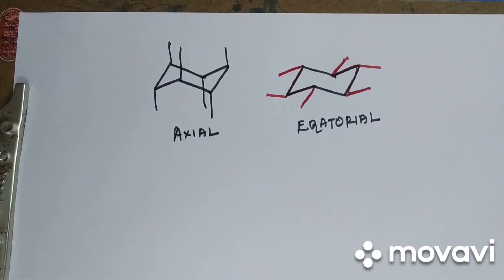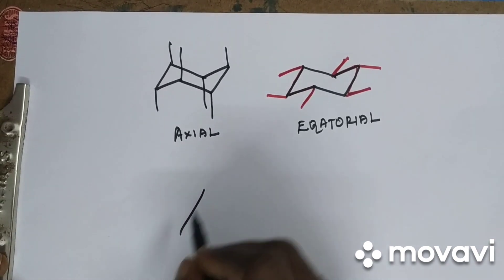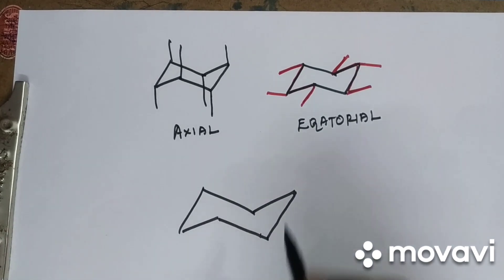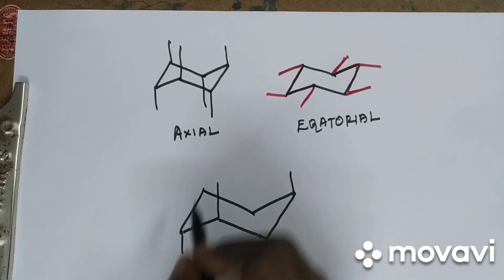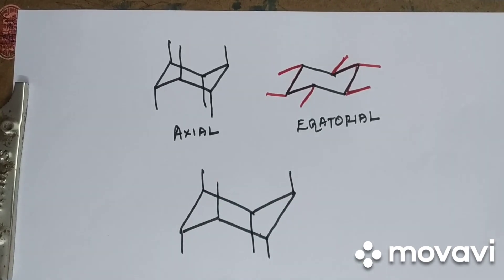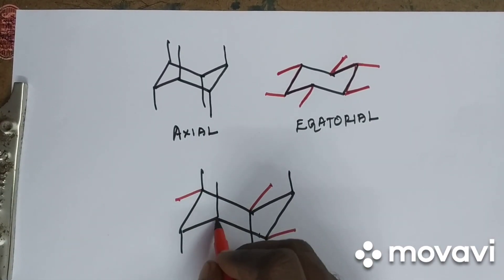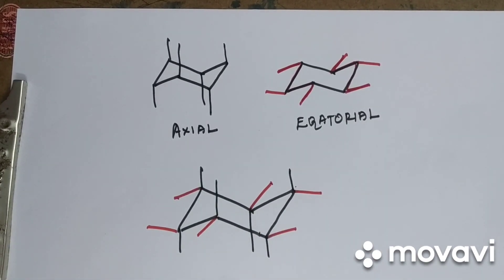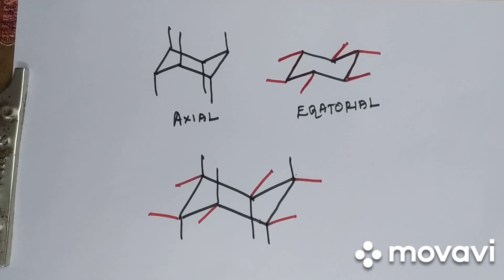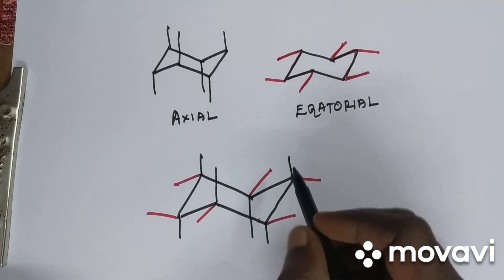Let me draw both axial and equatorial bonds together on the cyclohexane chair form. First the axial bonds: up, down, up, down, up, down. Then the equatorial bonds: first W, second W, horizontal line, horizontal line. The black vertical lines are axial bonds and the red lines are equatorial bonds.